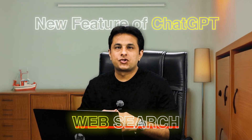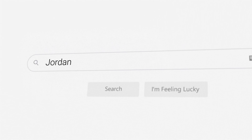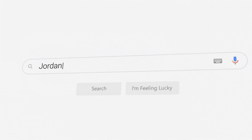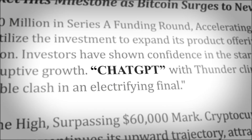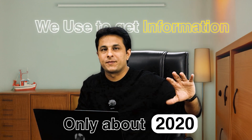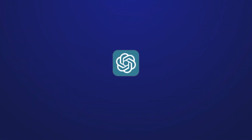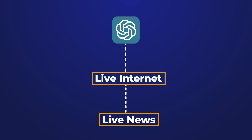In this video we'll talk about a new feature of ChatGPT which is web search. Gone are the days when you go to Google, search, click on different links and get the answers. ChatGPT earlier had a model which was trained, and from that database we used to search — but the data was only till 2020. Now ChatGPT is connected to the live internet, to the live news everywhere.